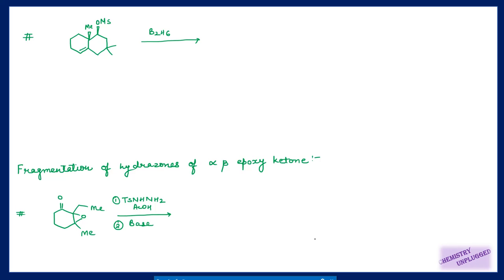We have seen that tosylate can be used as a leaving group in various decaline compounds for fragmentation reactions. Other compounds can also show fragmentation using different reagents. This time we use B2H6 (borane). We have a double bond, and first we do syn addition of borane. Drawing only this part of the structure in chair form: carbon one has two methyl groups, carbon three has a mesylate group which will preferentially go equatorial.